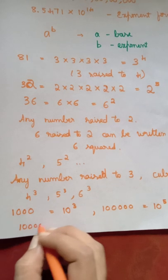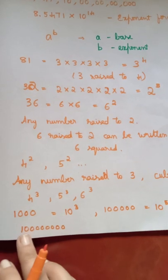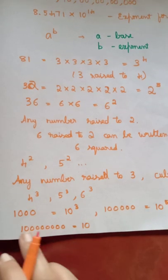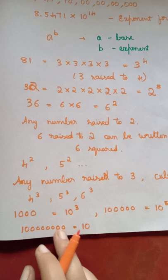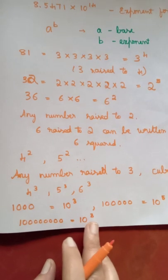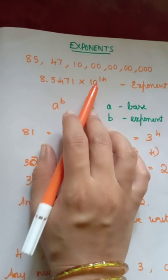Suppose you have one more larger term. See here, you write it as 10 raised to, count the number of zeros: 1, 2, 3, 4, 5, 6, 7, 8. So this is how you write the exponents when base is 10. The same principle you have used here. See, you are writing 10 raised to 14 because...